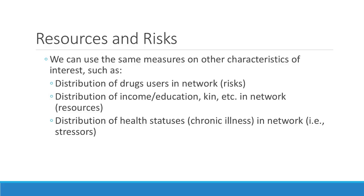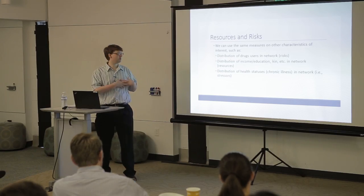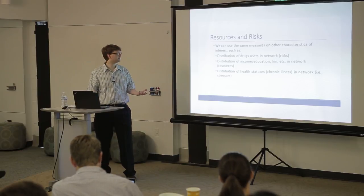You can also use these measures to study resources and risks — for example, the distribution of drugs among people in your network as a risk factor, or the distribution of income or education. You might want to study how your friends' resources affect your outcomes, or look at the distribution of health statuses — do chronically ill people tend to interact with each other, and does being tied to a chronically ill person cause stress?